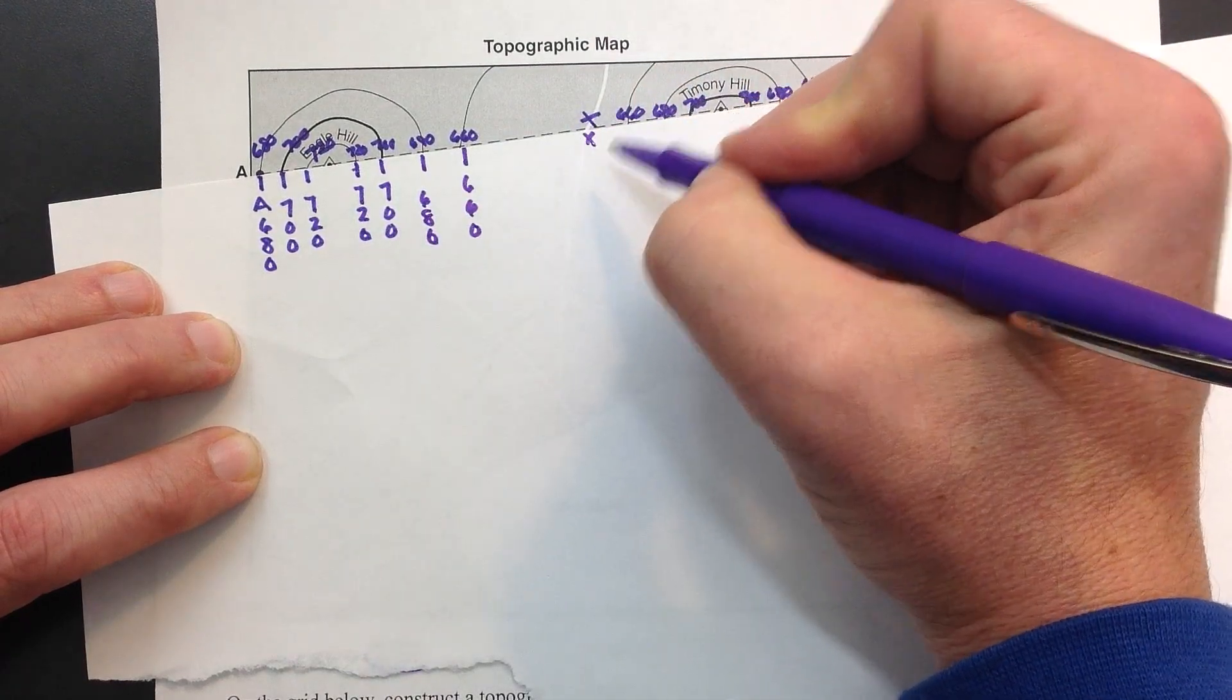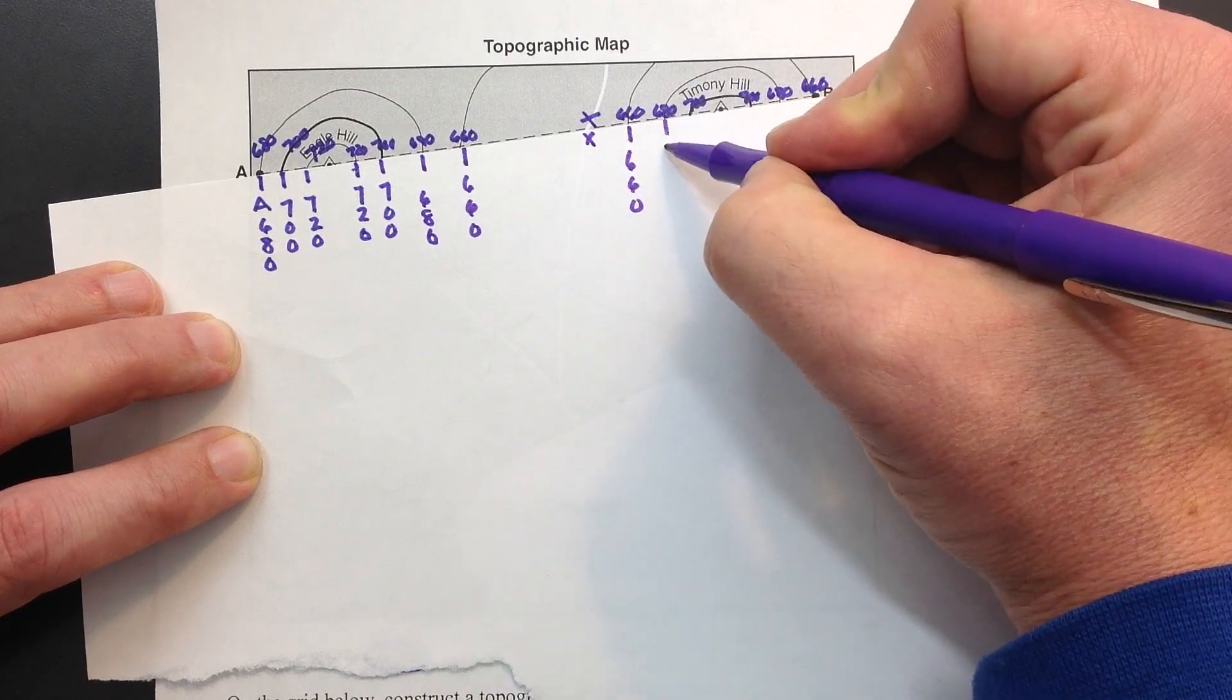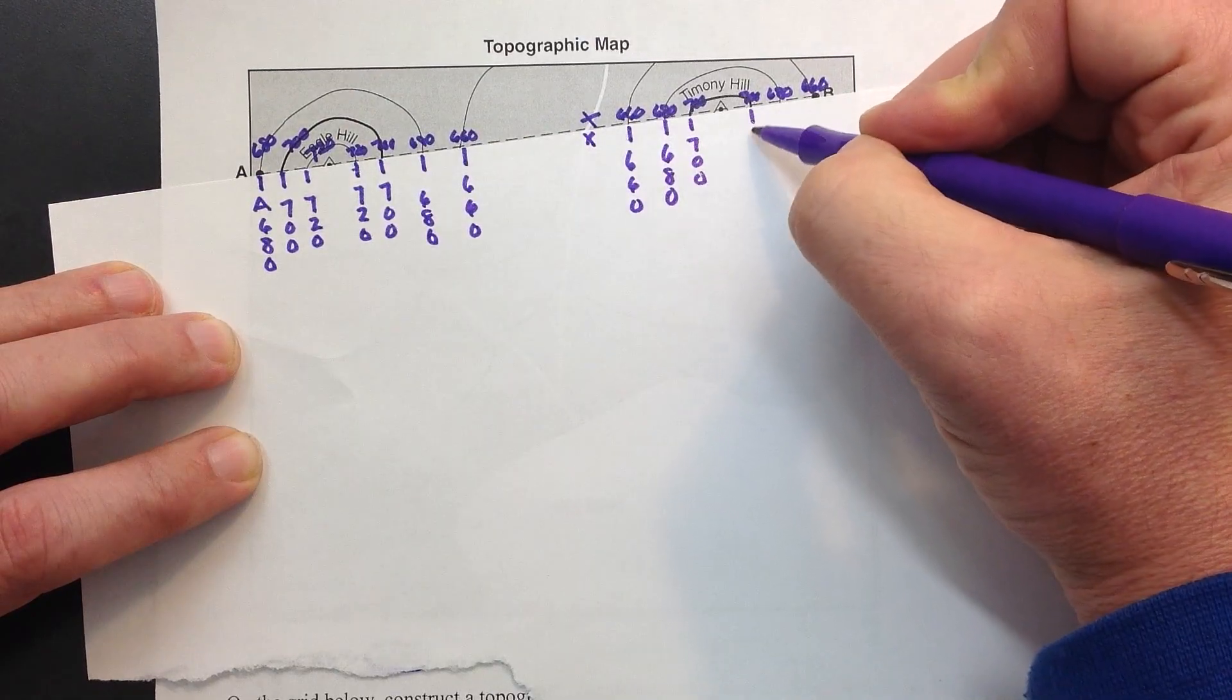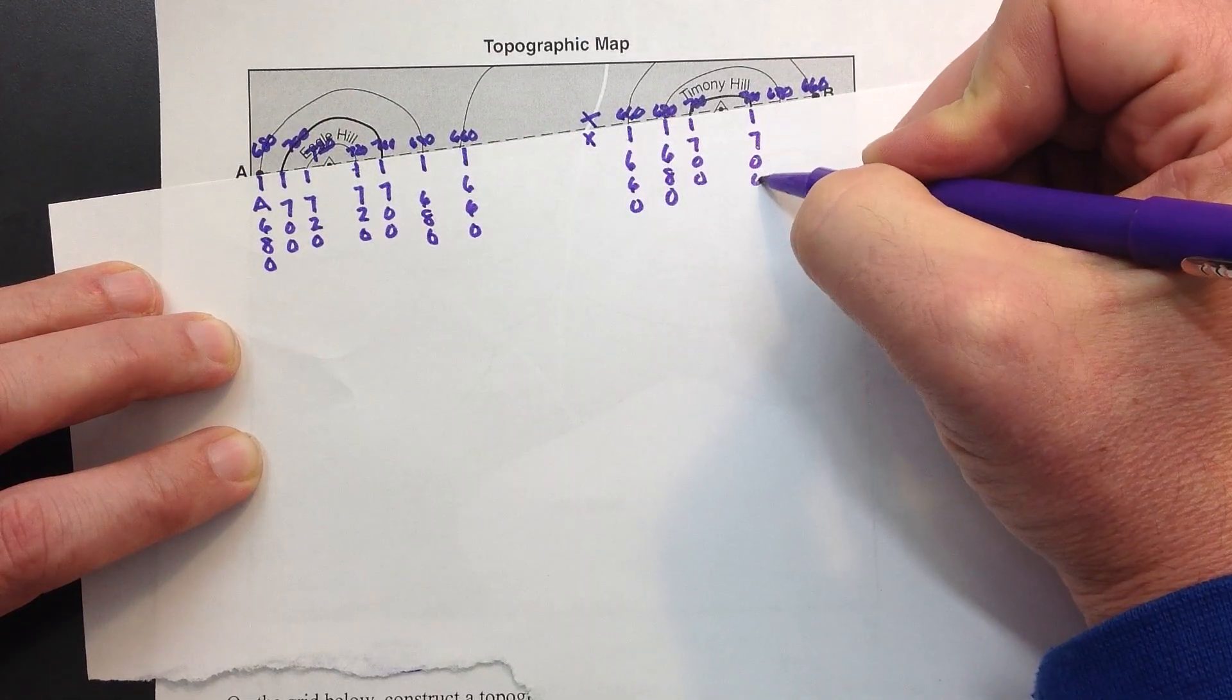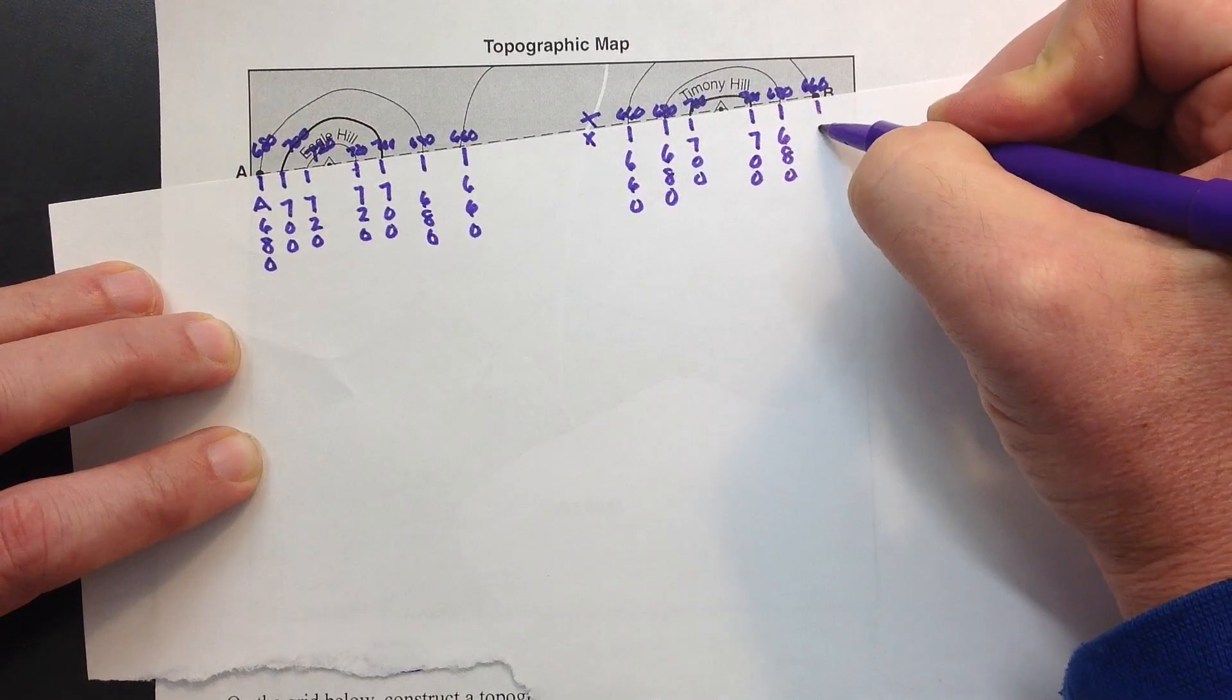There's the river right there. Then 660, 680, 700, back down the other side of the hill 700, 680 and then 660.